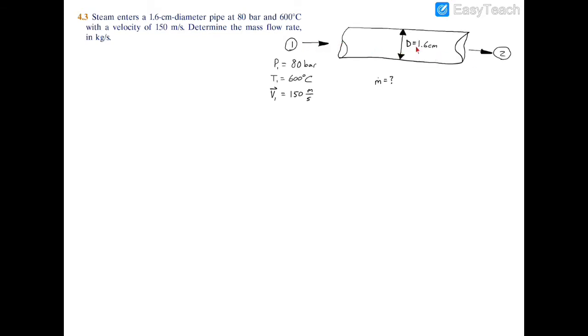In the schematic, we have steam flowing through this pipe with diameter 1.6 centimeters, pressure 80 bar, temperature 600 degrees Celsius, and velocity 150 meters per second. We're looking for the mass flow rate.